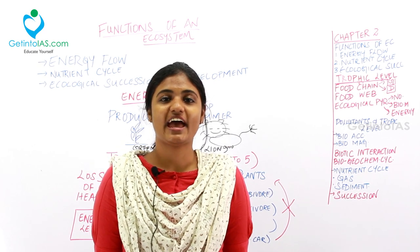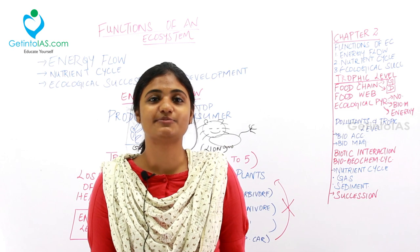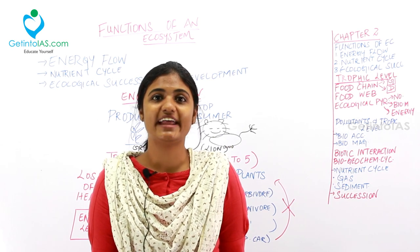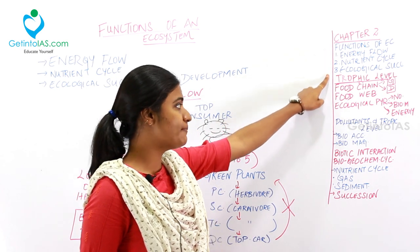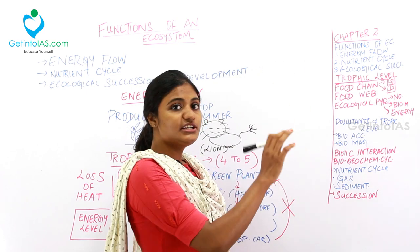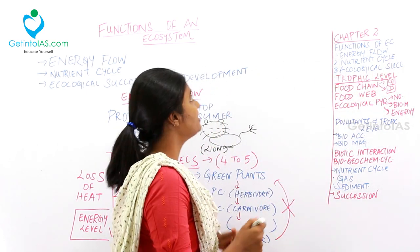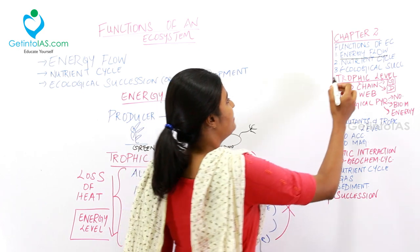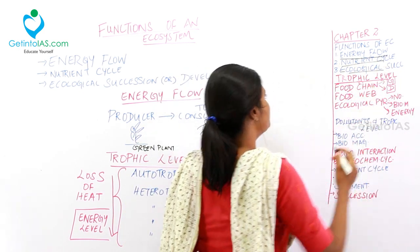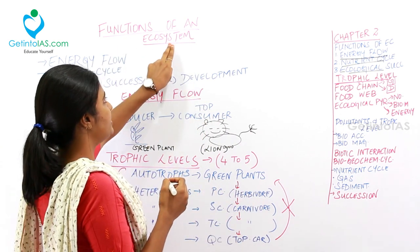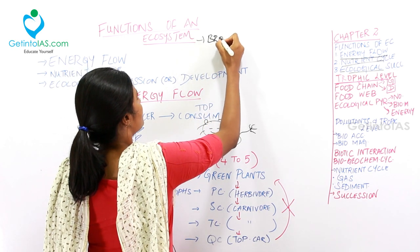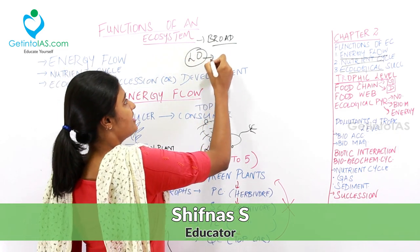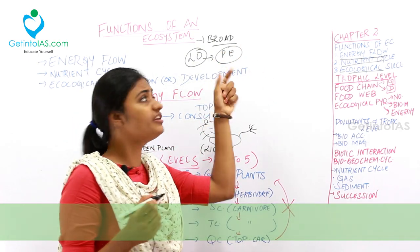Hello friends, welcome to Get Into IAS. This topic on environment and ecology is presented by me, Shipna. In the last chapter, we dealt with chapter 1, which covers the topic ecosystem. In this chapter, we are going to deal with chapter 2. The ecosystem is the balance between living organisms and the physical environment — that is the definition for ecosystem.